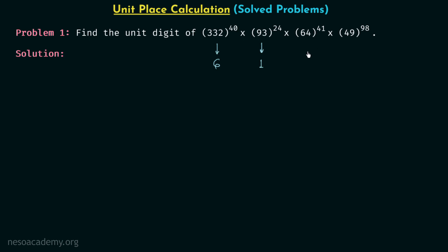Moving on to 64 raised to power 41. The digit at the unit place is 4. When we have 4 at the unit place, we simply check whether the power is even or odd. When the power is even we get 6 at the unit place, and when the power is odd we get 4. Here the power is 41, which is odd, so we get 4 at the unit place.